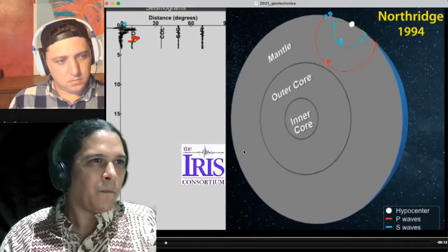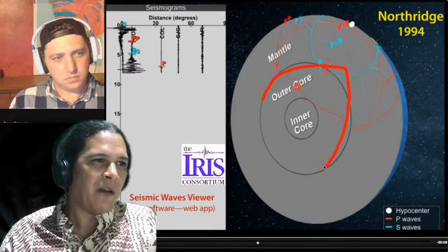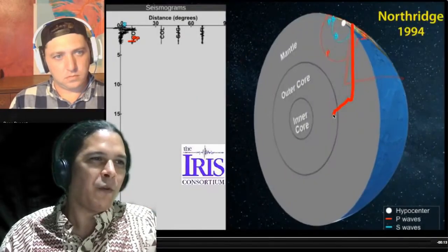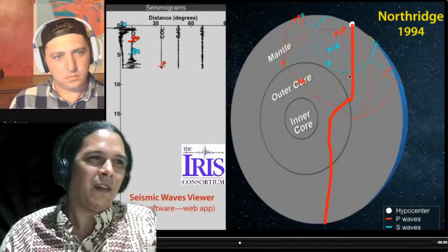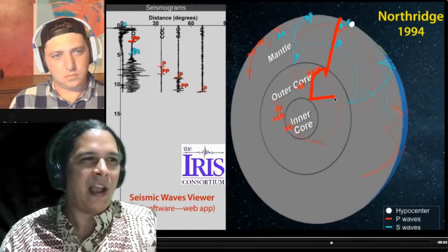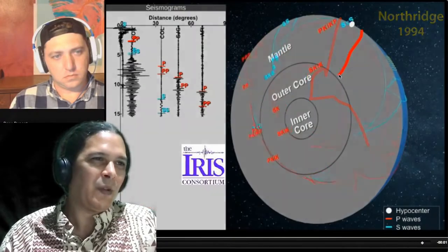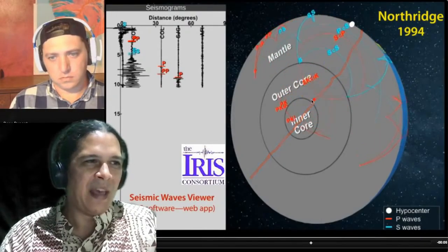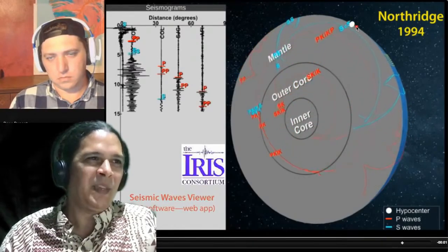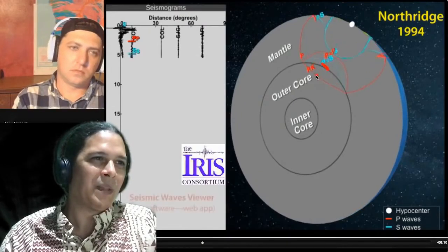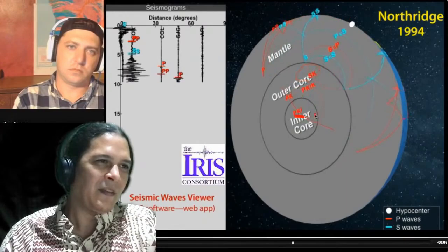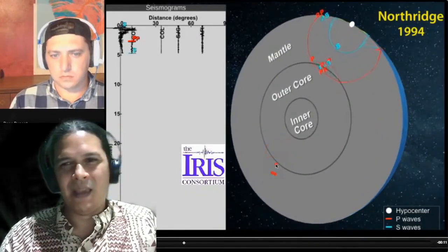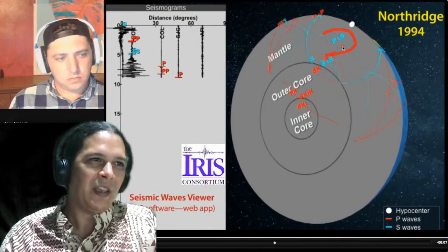When you have core layers — an outer core and an inner core — those waves actually bounce off or refract through and come out the other side, then refract again, or they go all the way through. All these different paths are termed with different nomenclature: a P wave entering the outer core region becomes a PK wave; if it hits the inner core it becomes PKI; if it hits the mantle again that's PKIK; if it exits back through the mantle it's PKIKP. There are also reflected phases like PCS and SCS.